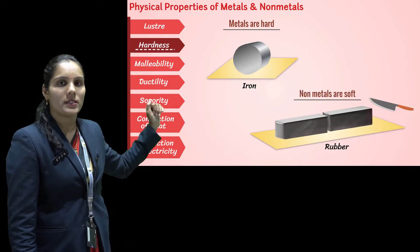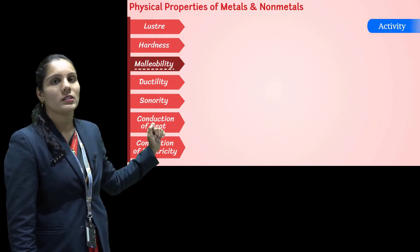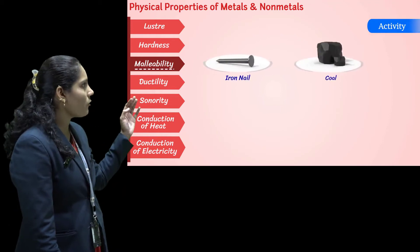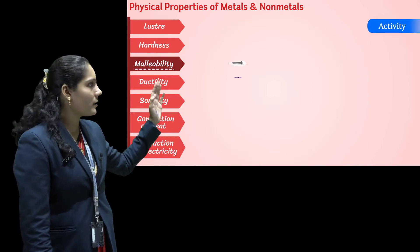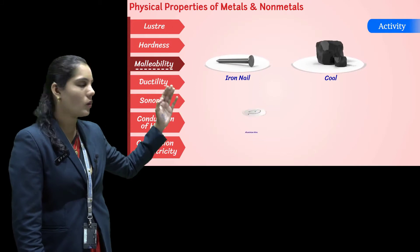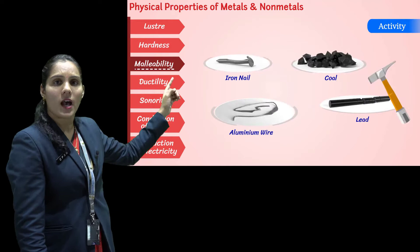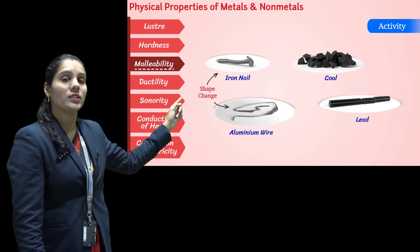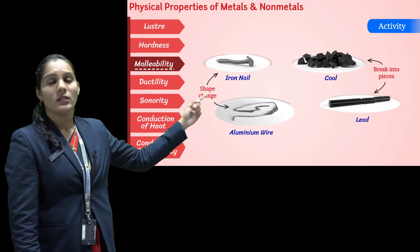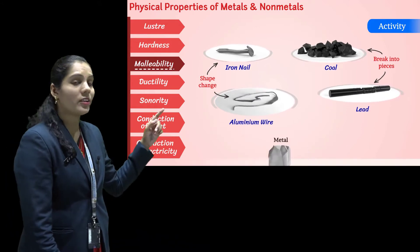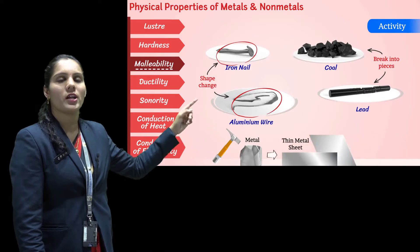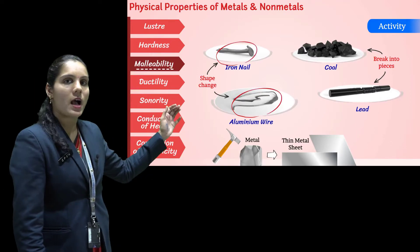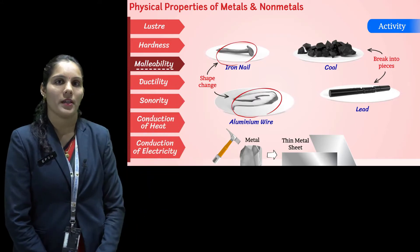The third property of metals and non-metals is malleability. Malleability means the ability to convert into thin sheets. For this activity, we use aluminium wires, iron nails, coal, and chalk. After hammering, the iron wires and nails change their shape — they can be beaten into sheets. But the coal and chalk break into small pieces. This means if you try to convert non-metals into thin sheets, they break. So metals are malleable in nature and non-metals are non-malleable in nature.